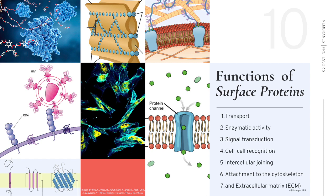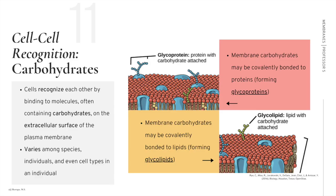Cell surface proteins carry out several functions important for life: transport of molecules across the membrane, enzymatic activity to speed up biochemical reactions, signal transduction to catalyze an intracellular response to an extracellular stimulus, cell-cell recognition for immunological responses, intercellular joining for stability and structure, and attachment to the cytoskeleton and the extracellular matrix.